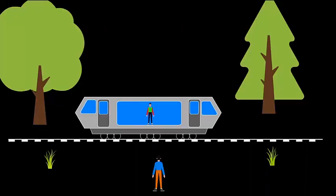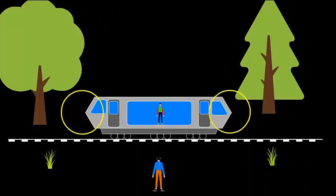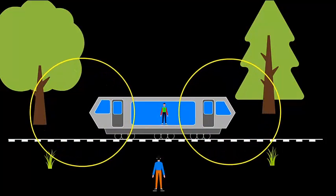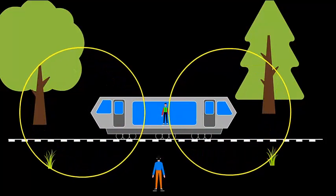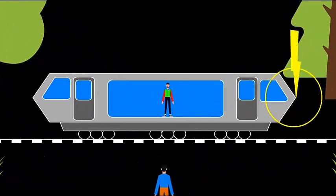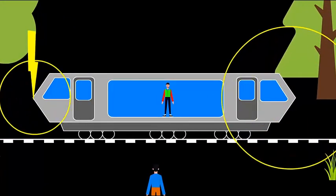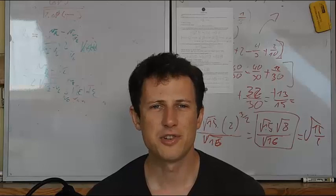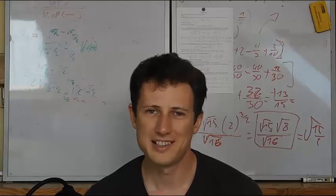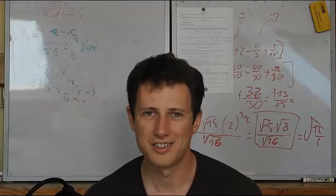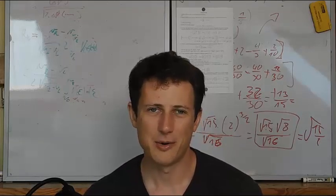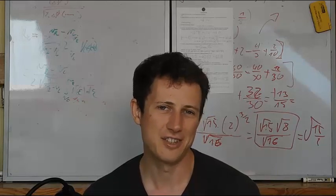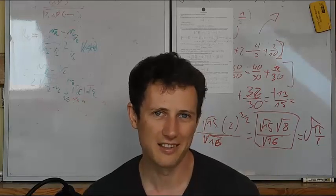Simultaneity basically means that if one observer experiences two spatially separated events at the same time, this won't be true for an observer moving relative to those events. And this is the crucial ingredient to understanding length contraction, because relative simultaneity breaks the very definition of the quantity called length.